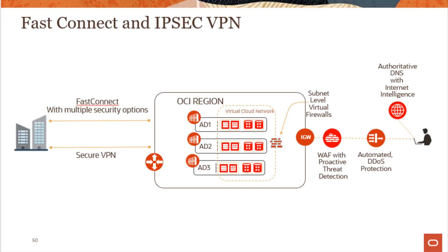Looking at the left hand side, we can see a customer is trying to connect an on-premise network to an OCI region. In this case, there are two options available for a customer to create a secure hybrid cloud connectivity. The first one is FastConnect — a dedicated private connection. The customer has their own private connection, not shared by anybody else. It provides redundancy and very fast speeds as the customer connects from their private data center to Oracle public cloud. FastConnect is inherently secure since it's a dedicated private connection and nobody else has access to it.